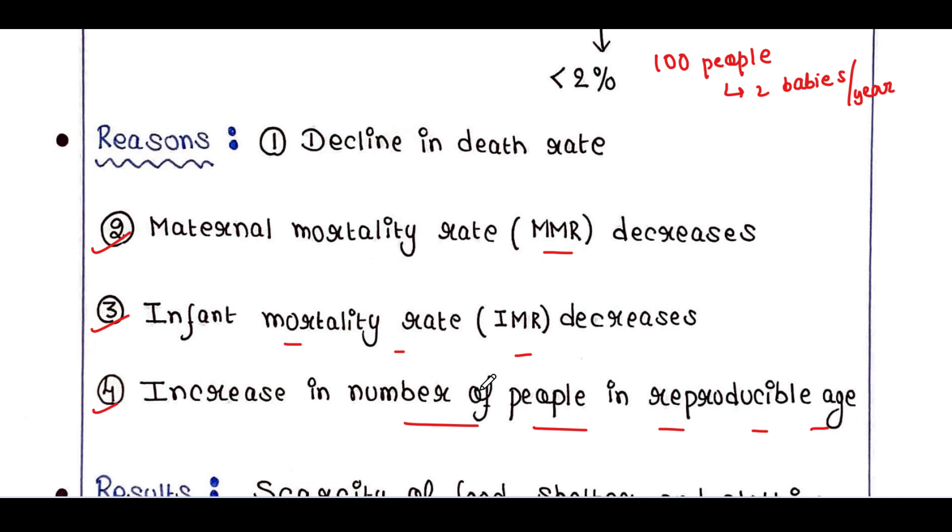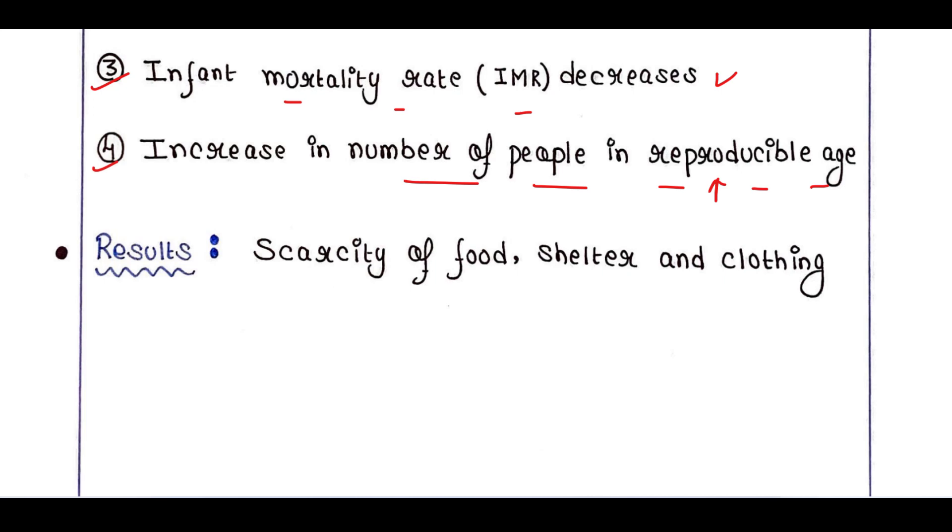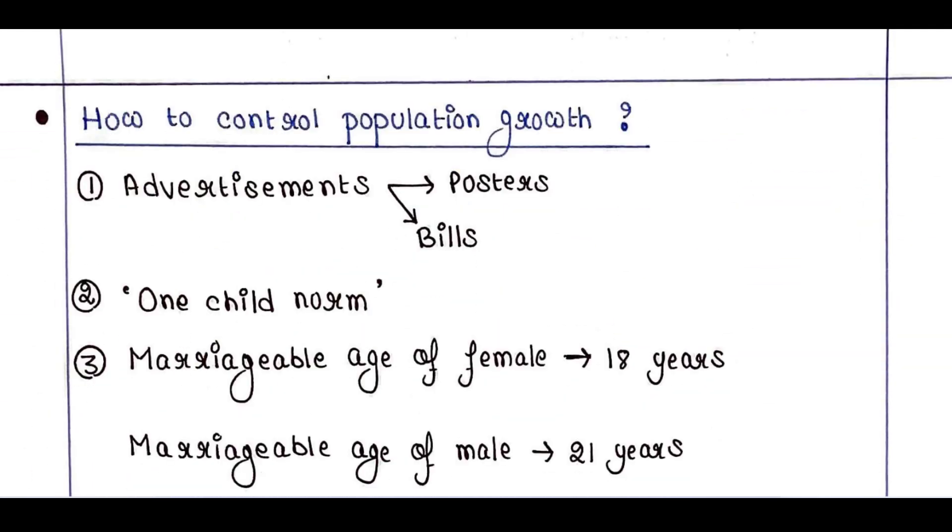See, since infant mortality rate decreases, it is most obvious that people in reproducible age increases. And what are the consequences of such a high population growth rate? There would be obvious scarcity in food, in shelter, in clothing, etc. Hence it was indeed essential to control the population growth.